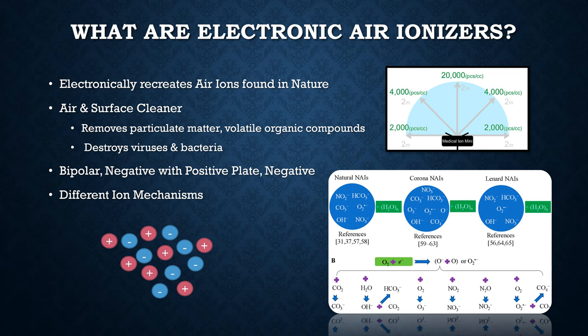So what are electronic air ionizers? They are devices that recreate air ions found in nature. They are both air and surface cleaners — they remove particulate matter and volatile organic compounds, and they destroy viruses and bacteria. They come in bipolar, negative with positive plate, and negative versions. There are different mechanisms by which they produce ions, which yield different results. You can see how ion density changes depending on where you are near the ionizer, and there are different types of sub-ions.